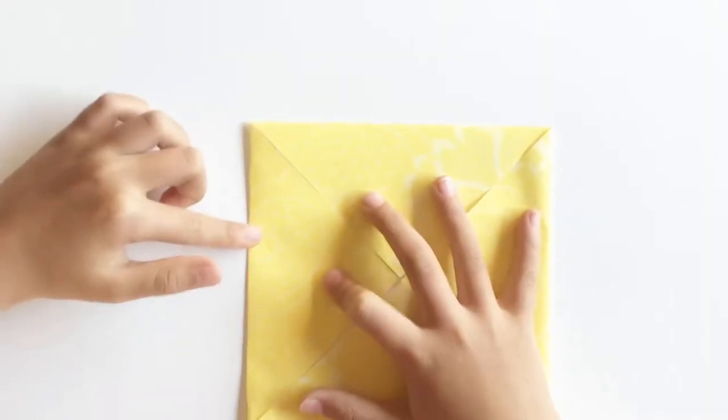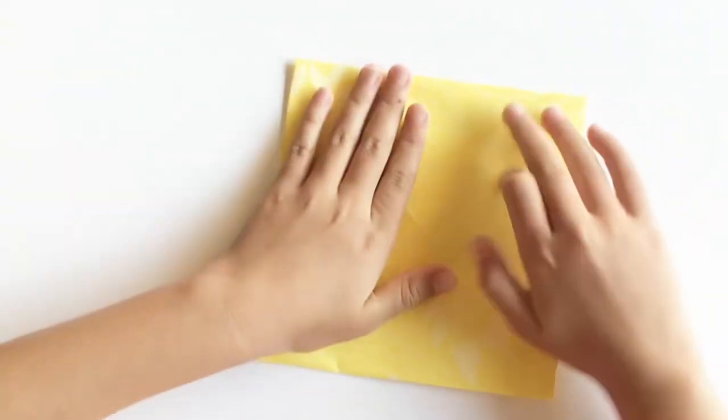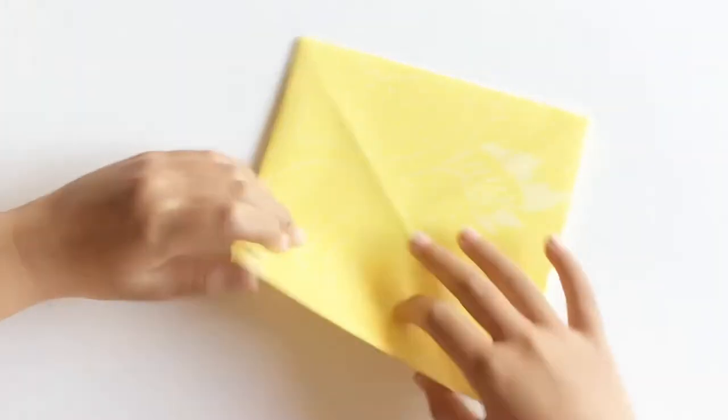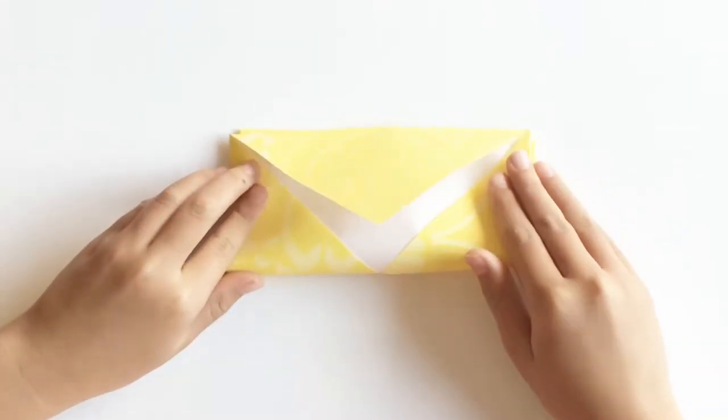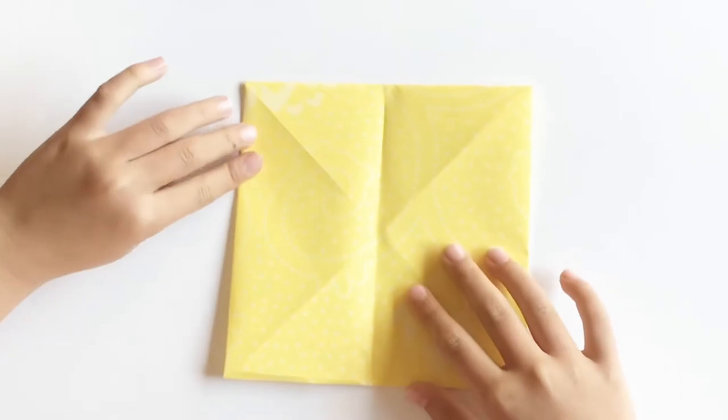When you're done folding, go around the perimeter of the origami paper to crease it. And then flip it over to the back and fold it in half once. And then unfold it and fold it again.